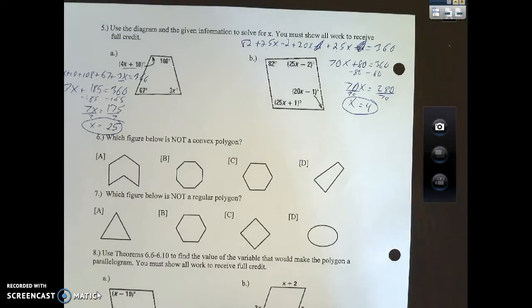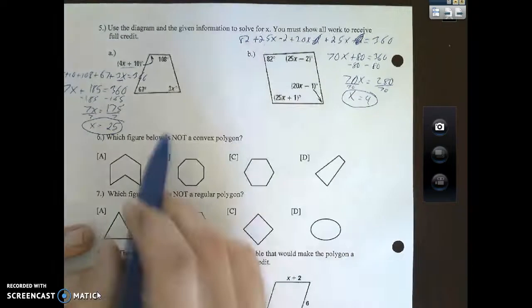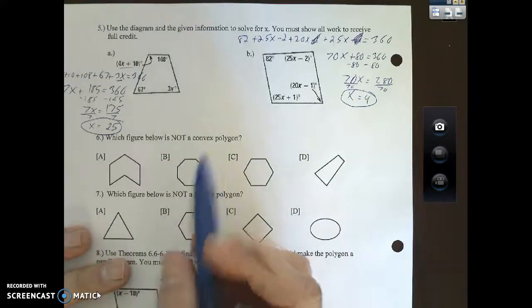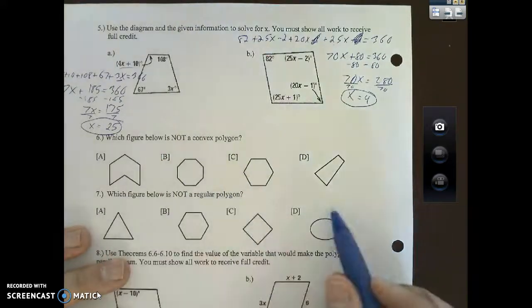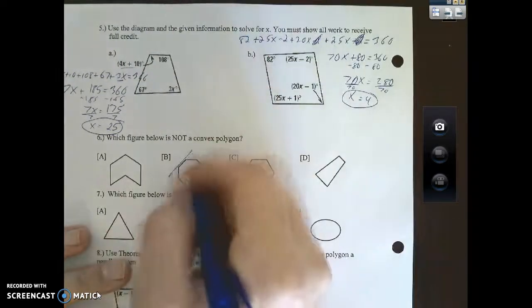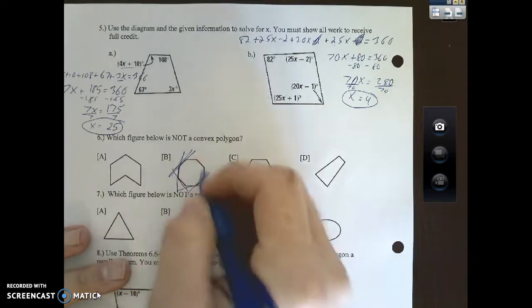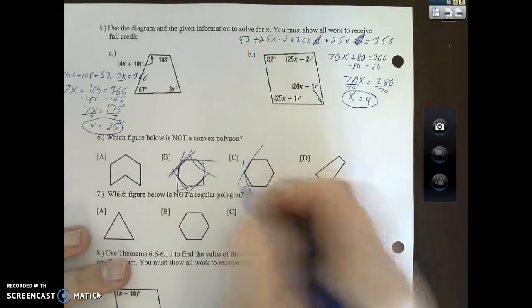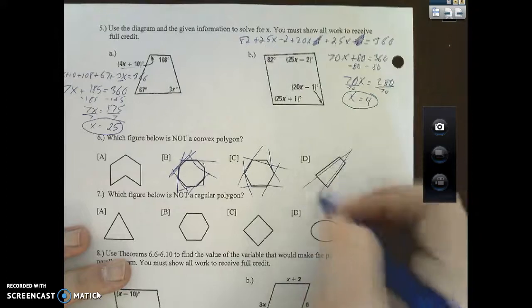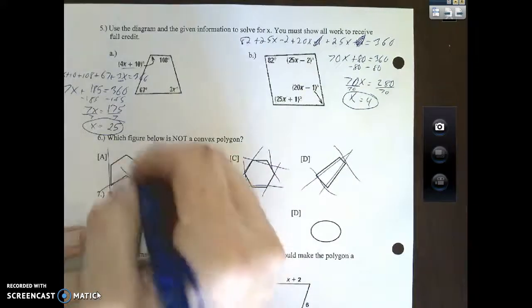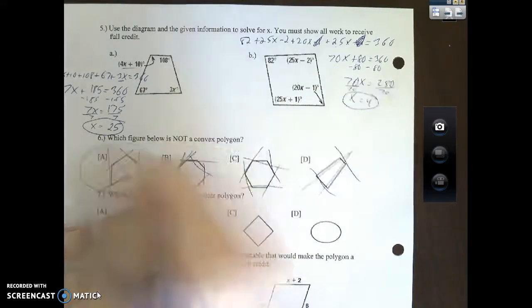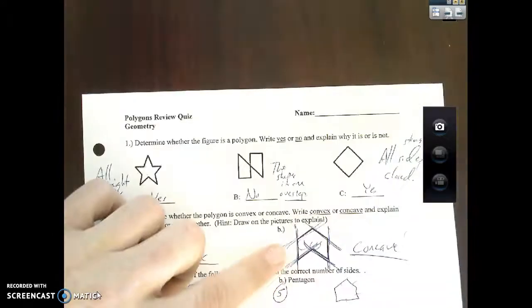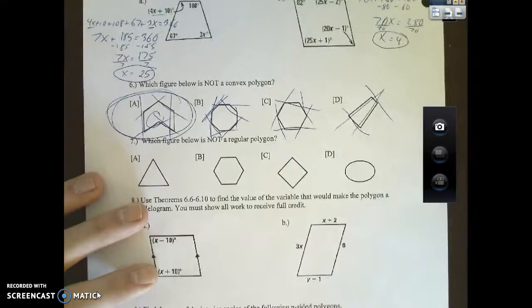Which figure below is not a convex? Not convex means it needs to be concave. So out of these four answers, which ones are concave? You can go through all of them, check them out if you'd like. You probably notice that I skipped part A—that's because part A is actually your convex one, it's going inward.